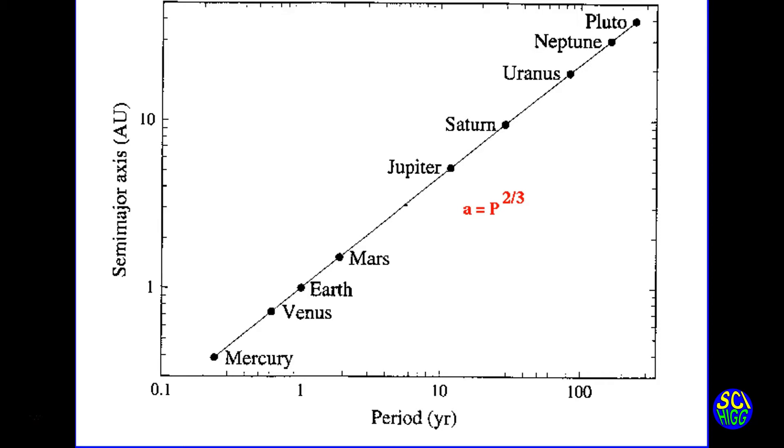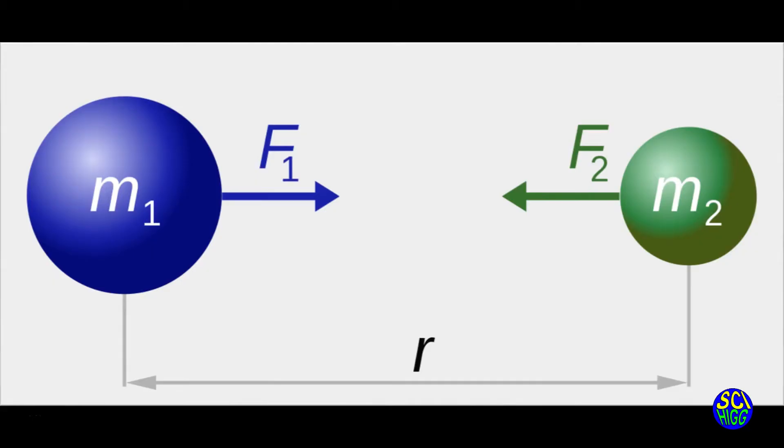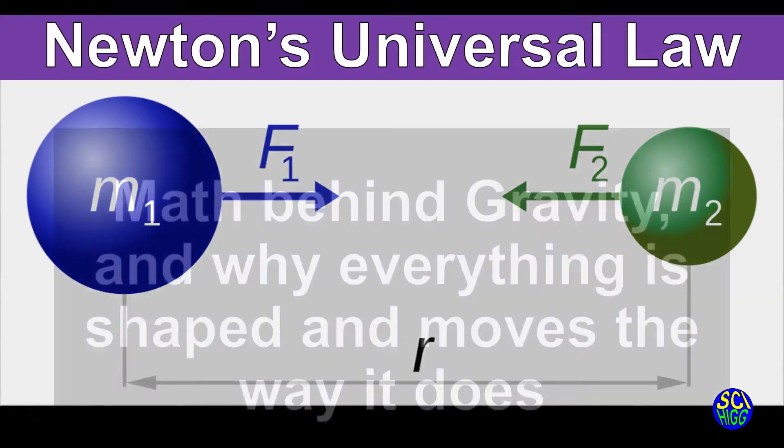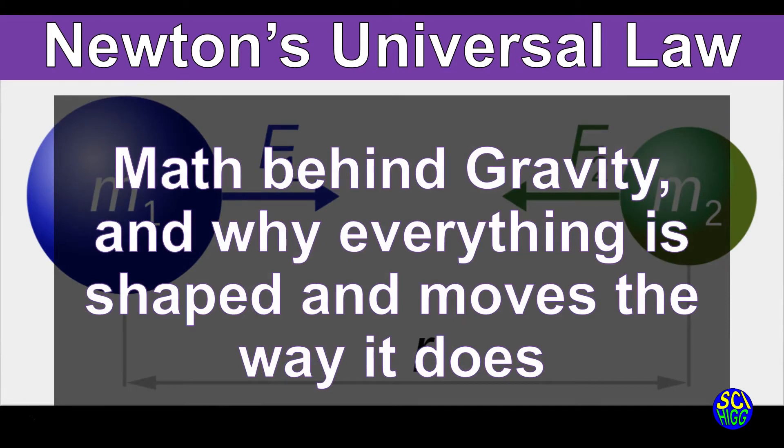Comparing the semi-major axis and the periods of the planets, we can see that there is a pattern, and that pattern was a mystery at the time to Kepler, because the mathematics behind gravity took even more measurements. And this is why you really couldn't discover it until Newton's universal law of gravity, when Sir Isaac Newton discovers the math behind gravity. And this is kind of why everything is shaped and moves the way it does.